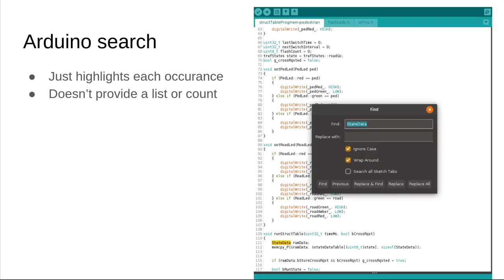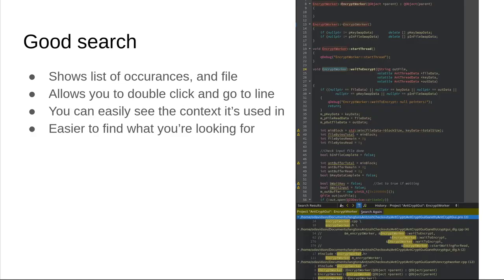The Arduino IDE has a terrible search. Finding everywhere in your code where you've used a certain variable or function is very important for debugging and understanding your own code the next day when you've forgotten everything. The search functionality in Arduino highlights each occurrence of the search term one by one and iterates through them. Most IDEs search by showing a list of occurrences, allowing you to go straight there by clicking the line and easily seeing the context in which it's used and how many times.